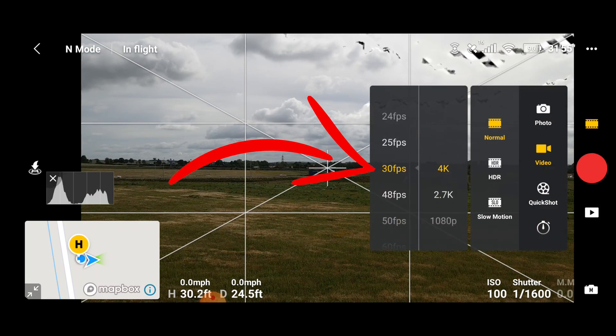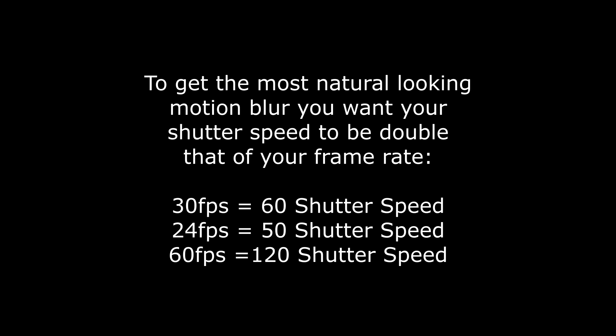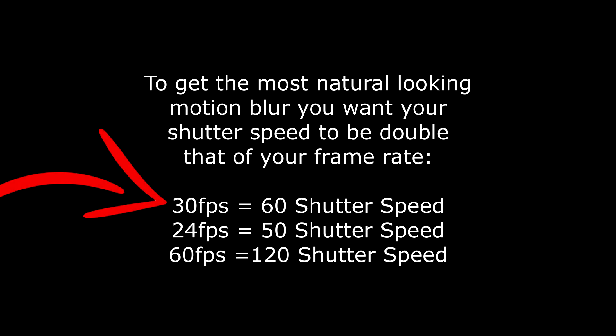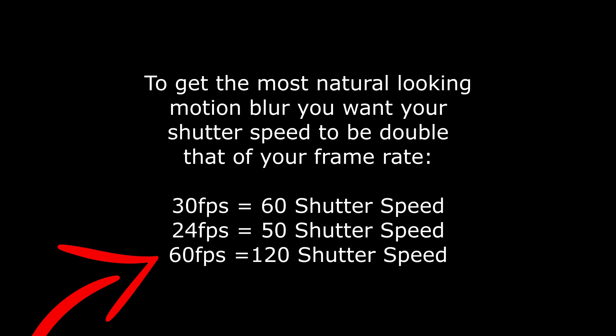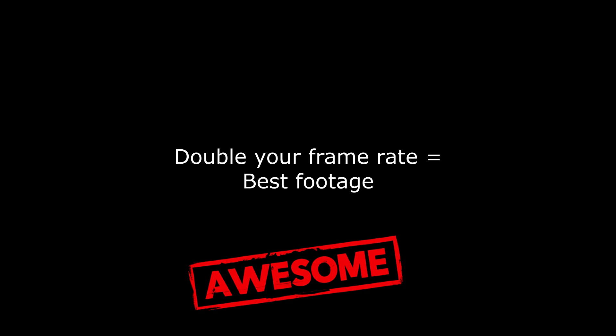At this present moment I'm recording at 30 frames per second. To get the most natural-looking motion blur, you want your shutter speed to be double your frame rate. So because I'm recording at 30 frames per second, ideally I want my shutter speed to be 60. If I was recording at 24 frames per second then I would need a shutter speed of 50, and if I was recording at 60 frames per second then I'd need a shutter speed of 120. I won't go into the science of why this gives you the most natural-looking motion blur, but you can Google it afterwards.